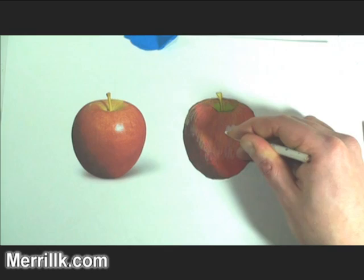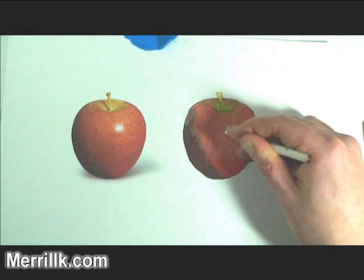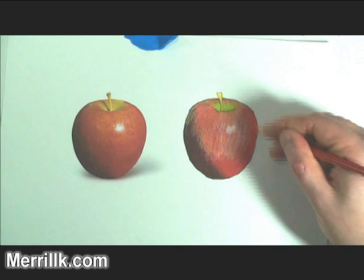And I'm probably going to add a few layers of color with the colored pencils. I'm adding the highlight in. I'm trying to see everything as shapes. And I see that bright white shape on the left-hand side, on the apple on the left, and I'm putting it on the apple on the right.